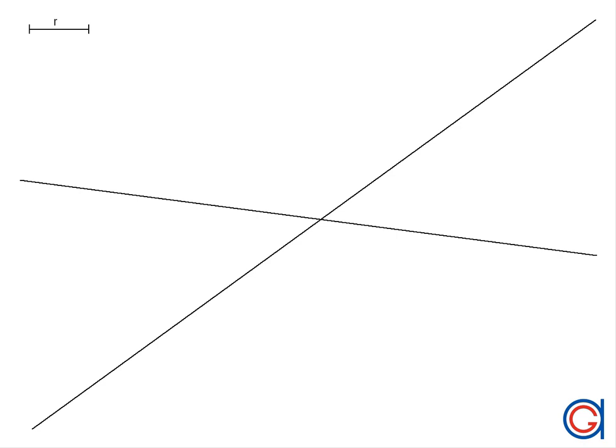Hello, today we are going to learn how to draw four circles of a given radius r which are tangent to two given intersecting lines, as can be seen here.